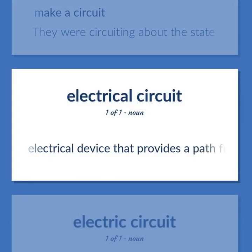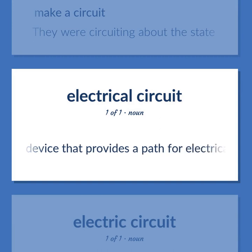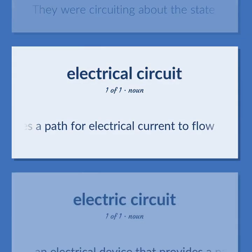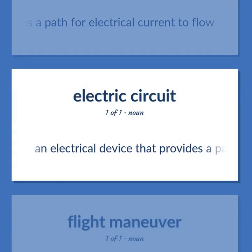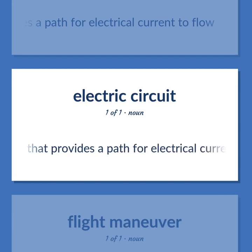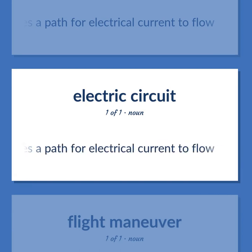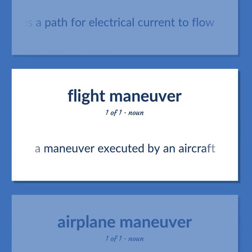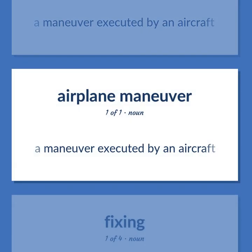Law: a judicial division of a state or the United States — so called because originally judges traveled and held court in different locations. One of the 12 groups of states in the United States covered by a particular circuit court of appeals. An electrical device that provides a path for electrical current to flow. A maneuver executed by an aircraft.